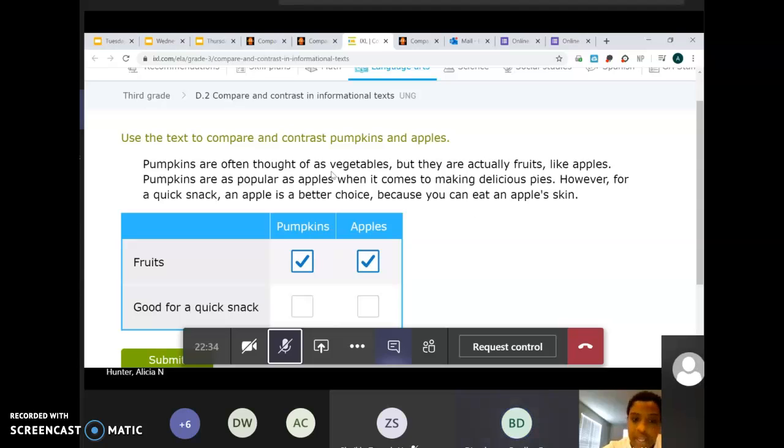I'm going to call on Jayden. Thank you Bradley. Good for a quick snack. Pumpkins, apples, or both? Jayden Johnson, unmute yourself and tell me. Pumpkins, apples, or both? Good for a quick snack. I don't think your, I don't remember, something was wrong with your mic, so you can just type it Jayden. You can tell me pumpkins, apples, or both. Because even when you unmute yourself, I can't hear you. Apples, good. Because in this last sentence here, it says, however, for a quick snack, an apple is a better choice. Remember that clue word, however, shows how you can contrast something, how it gets you things different. Good job.